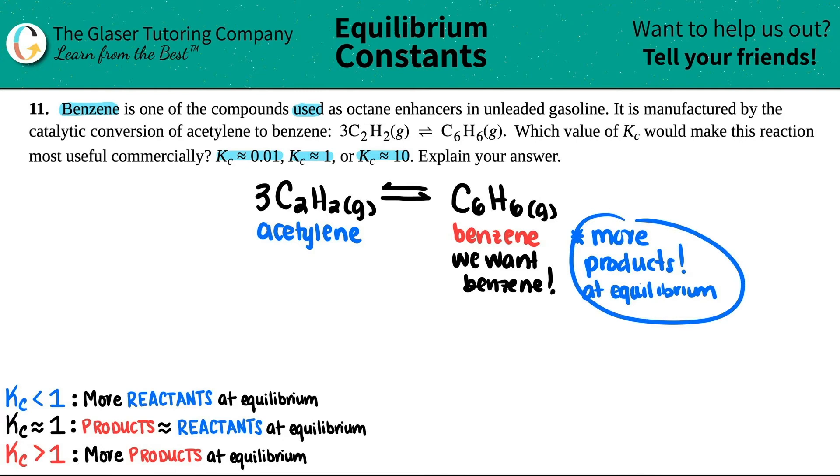But now we're going to take this and run with it. We need to know what that means. And here it is, right here. More products at equilibrium will always give us a Kc value of greater than one. We don't really know for certain what number it is, but if we want to favor the products, and in this case benzene, we need a Kc value greater than one. Are we talking about 10, 100, 1,000? It's just got to be greater than one. They gave us three options.